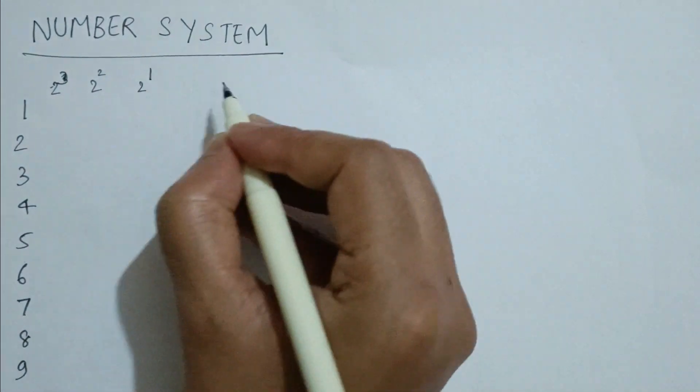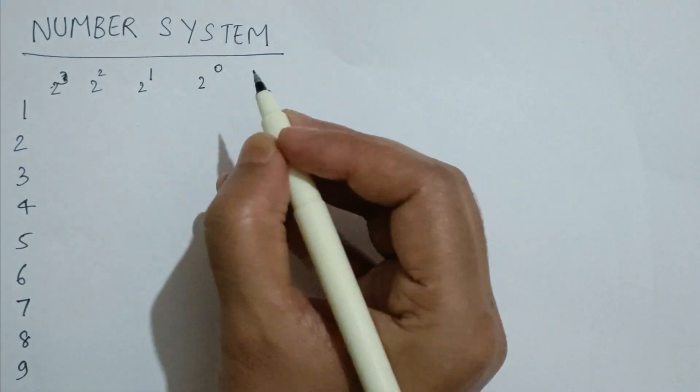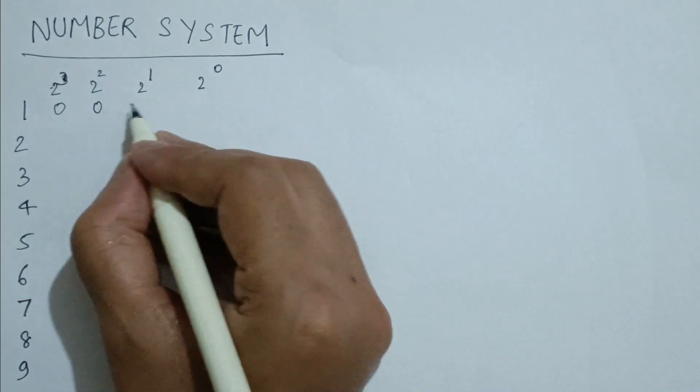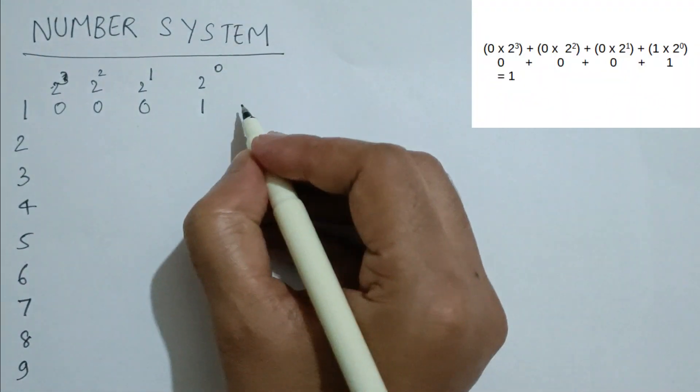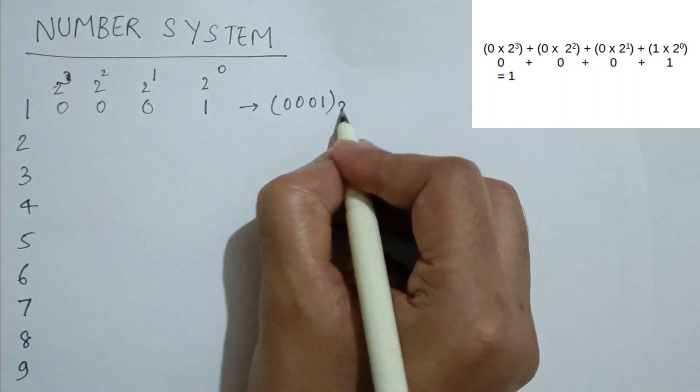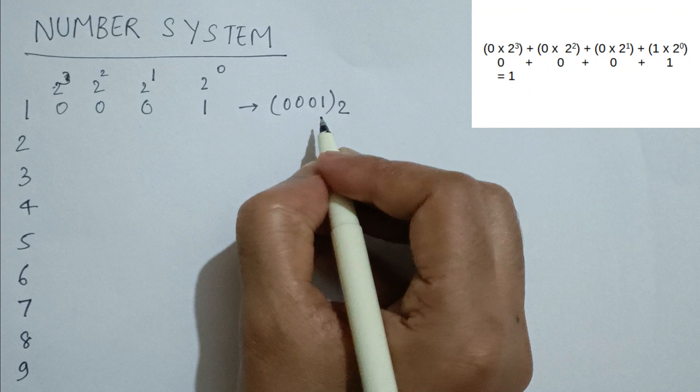To represent 1, we know the value of 2 to the power of 0 is equal to 1. If we multiply it by 1, then it will be 1, and the rest of the digits will result in 0 after getting multiplied by 0. After adding, the total value will be 1.